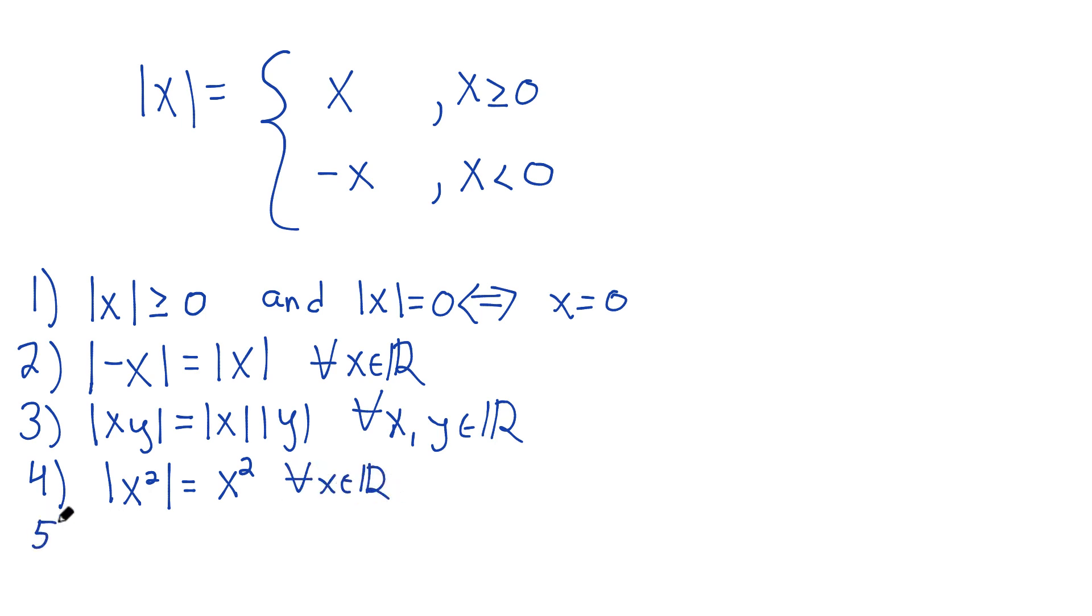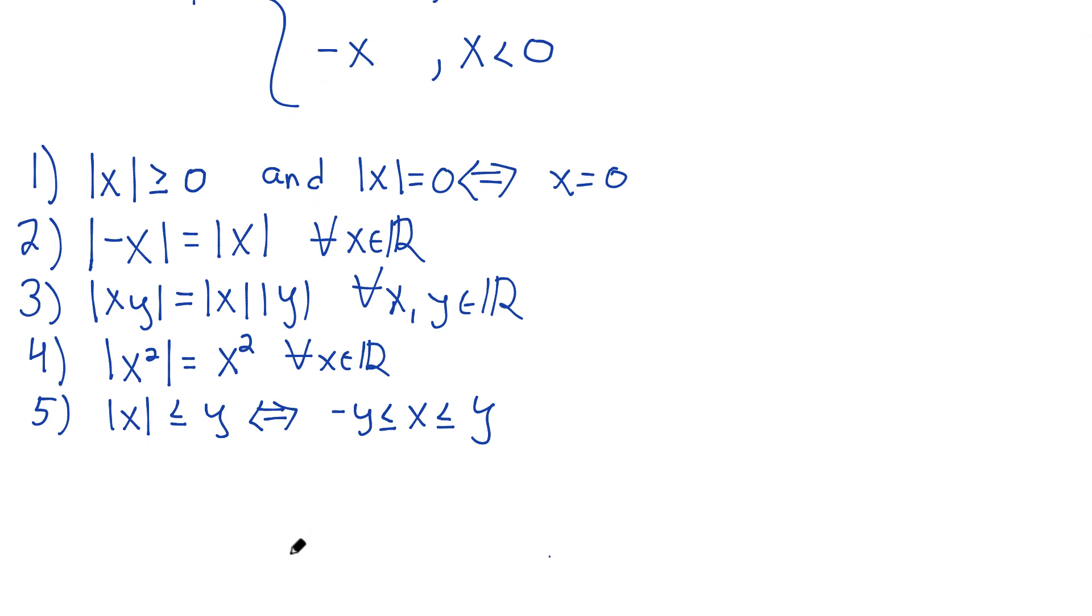Number five, less known. The absolute value of x is less than or equal to y if and only if x is between minus y and positive y. So these are equivalent statements, and this is often how you actually solve absolute value equations when you're doing things like pre-calculus.